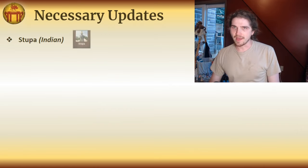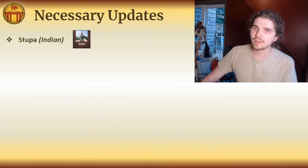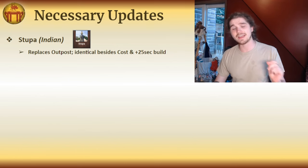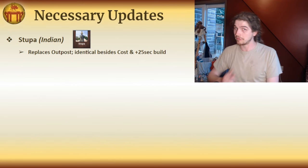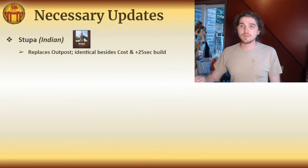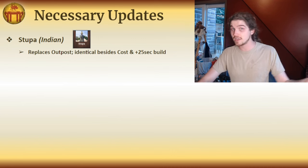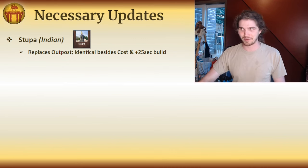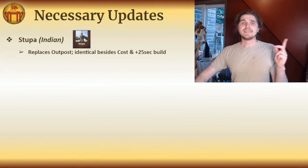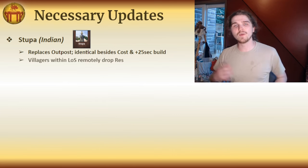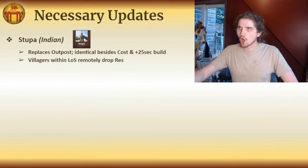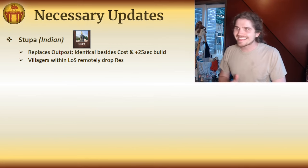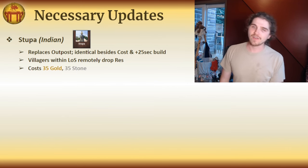First, the Stupa. This would be available to all or most Indian civilizations as a replacement to the outpost, identical besides its cost and extra build time. It's a somewhat similar building to the Atashkdeh from my Persian build — a more expensive gold-costing outpost replacement that has an economic benefit. The Stupa makes it such that villagers within line of sight remotely drop off their resources — essentially giving the Khmer farming bonus to all villagers within line of sight. It costs 35 gold and 35 stone, so it's far from free.